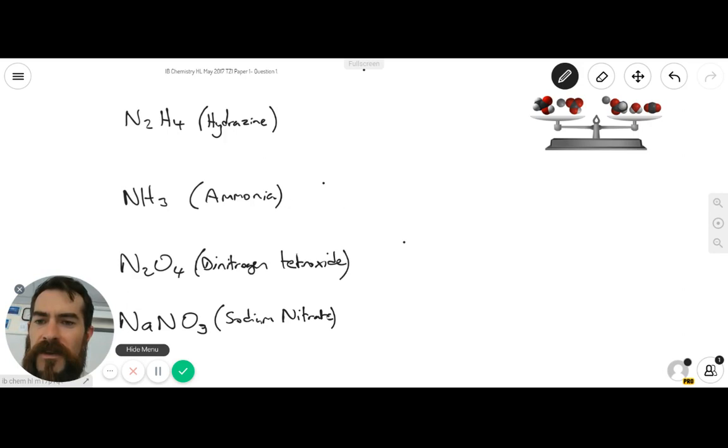So the first compound is N2H4, which is hydrazine. NH3 you should be familiar with, which is ammonia. N2O4 might be new to you, that's dinitrogen tetroxide, and NaNO3 is an ionic compound there, and it's sodium nitrate.